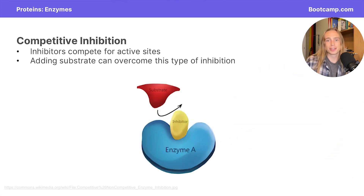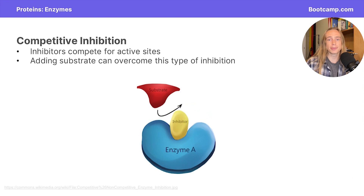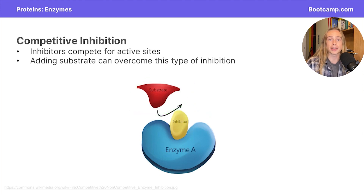Competitive inhibition basically implies that there's competition between an inhibitor and a substrate. The inhibitor binds to the active site, and when it is bound, this prevents the substrate from being able to bind to the active site. One way to overcome competitive inhibition is to add a lot more substrate — eventually the substrates will outnumber the inhibitors and you'll still get a good reaction rate.